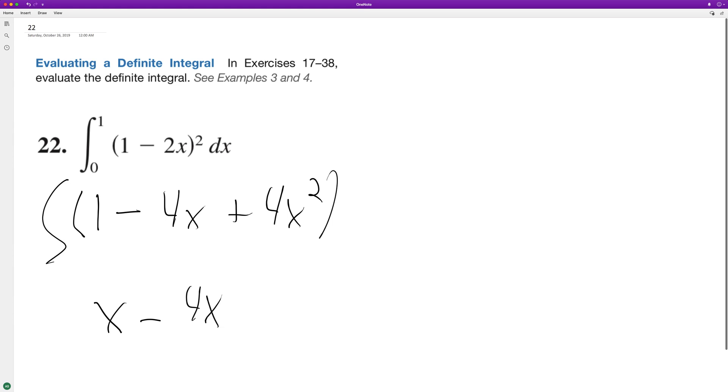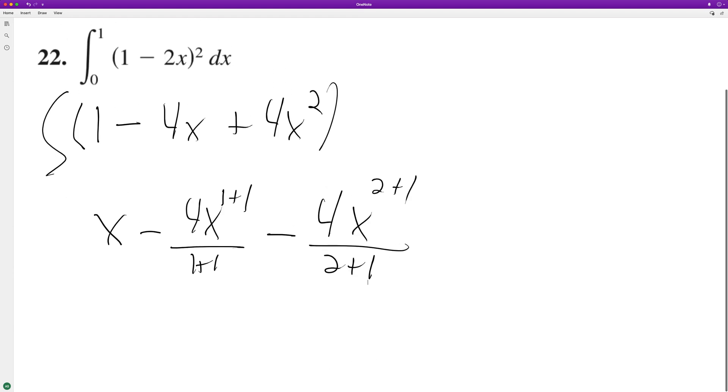So 4x raised to the 1 plus 1 over 1 plus 1 minus 4x raised to the 2 plus 1 over 2 plus 1. So we end up with x minus 2x squared minus 4x cubed over 3. And this is all going to go from 0 to 1.